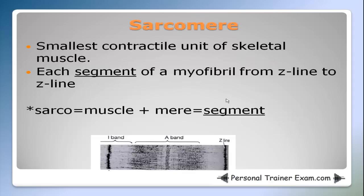Sarcomere. Sarcomere is the smallest contractile unit of skeletal muscle. Each segment of a myofibril from Z line to Z line is a sarcomere. To help you remember this term: sarco means muscle, and mere means segment — so think 'a muscle segment.' From this Z line here to this Z line, from Z line to Z line, is a sarcomere.